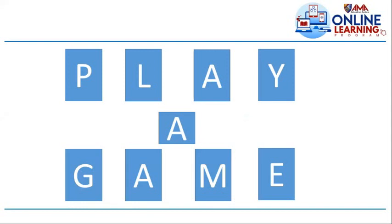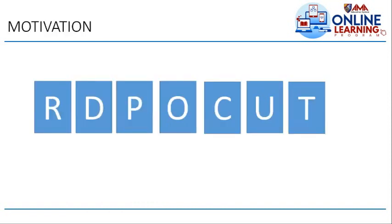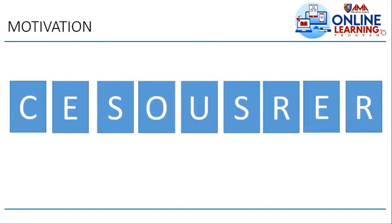I will show you a jumble letter and you need to tell me what it means. For the first word, the correct answer is 'product.' For the second word — the letters are C, E, S, O, U, S, R, E, R — the correct answer is 'resources.'